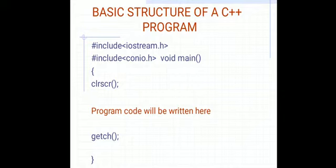Header files are predefined files in the C++ library using which we can create new programs. Here we are using iostream.h and conio.h. iostream means input output stream and conio means console input output. iostream includes cout and cin, which we will discuss further. conio.h is used for console applications such as getch, which is used to hold the output of the program whenever it is executed.